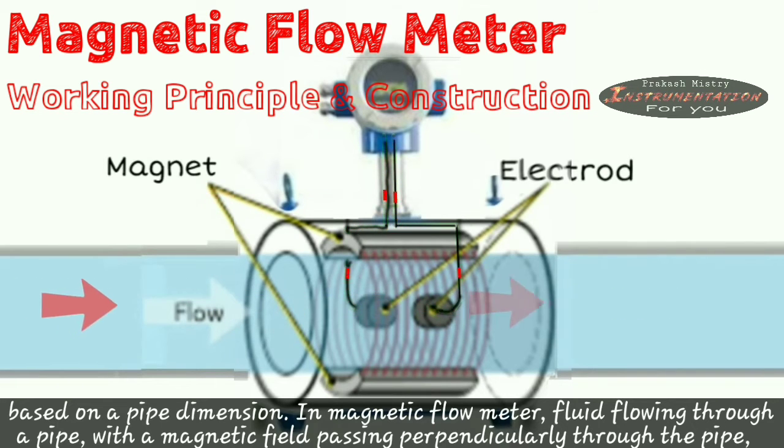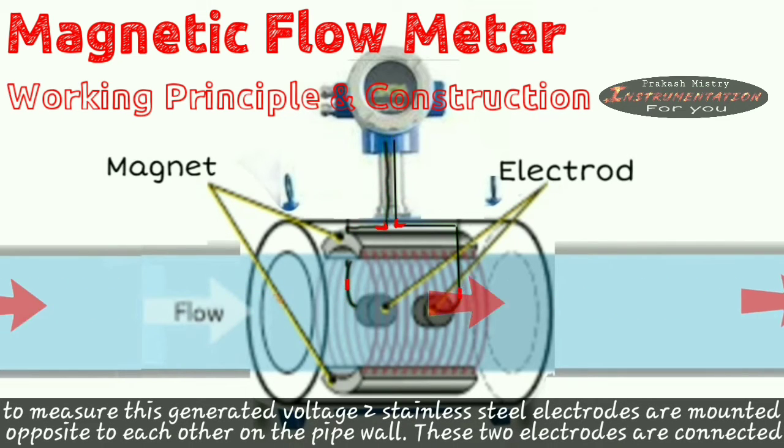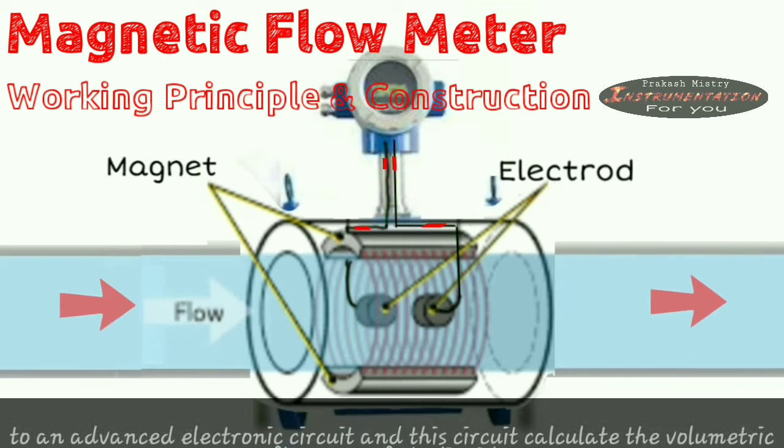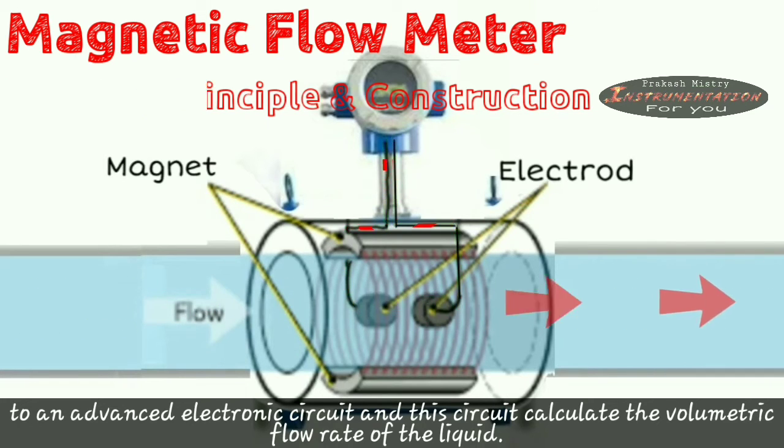In a magnetic flow meter, fluid flowing through a pipe with a magnetic field passing perpendicularly through this pipe. Here the liquid flowing through the pipe acts as a conductor and this induces a voltage which is proportional to the average flow velocity. To measure this generated voltage, two stainless steel electrodes are mounted opposite to each other on the pipe wall. These two electrodes are connected to the advanced electronic circuit and this circuit calculates the volumetric flow rate of the liquid.